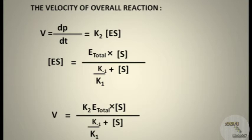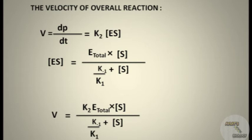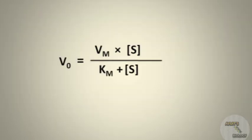Substituting the expression for [ES], we can write V in terms of E total. The term k2·E total is the maximum rate of the reaction, called Vmax or Vm, at a particular enzyme concentration E total. The ratio k minus 1 over k1 is a constant replaced by Km, the Michaelis-Menten constant. The overall Michaelis-Menten equation is: V0 equals Vm times [S] divided by Km plus [S].